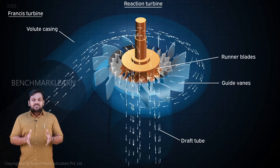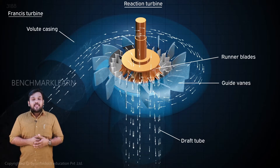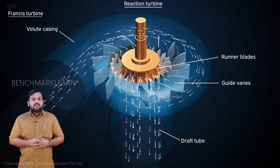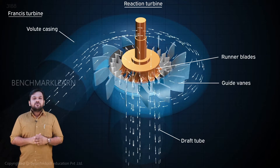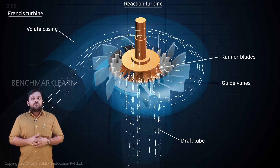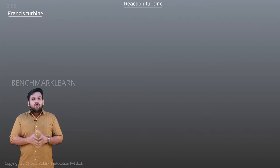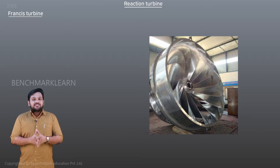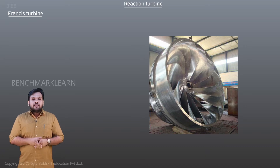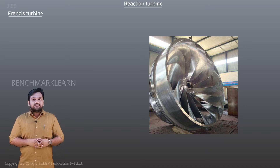Since the water enters radially and leaves the turbine axially, the Francis turbine is also known as a mixed flow turbine. The Lower Periyar project in Kerala uses three Francis turbines of 20 megawatt each at a rated head of 184 meters.